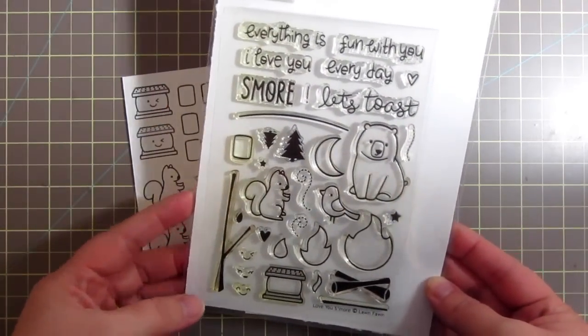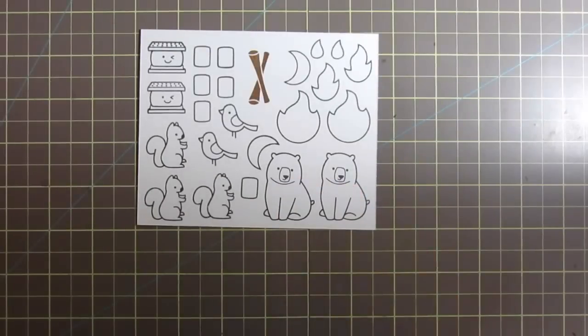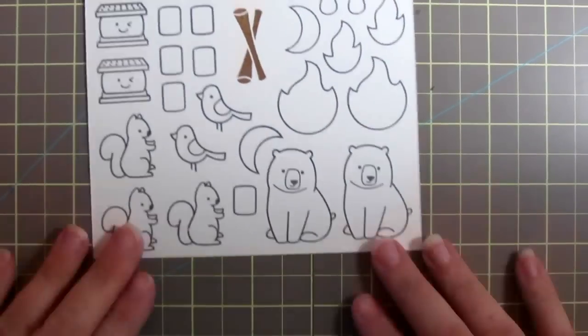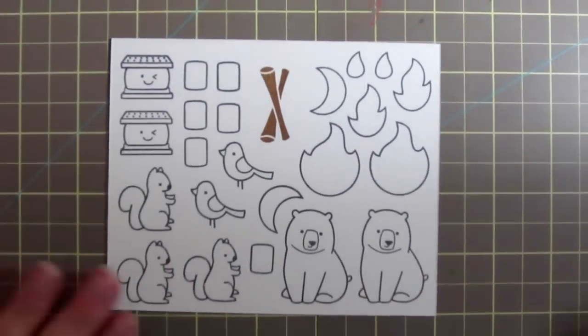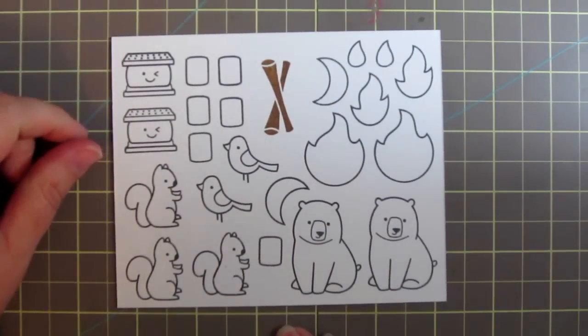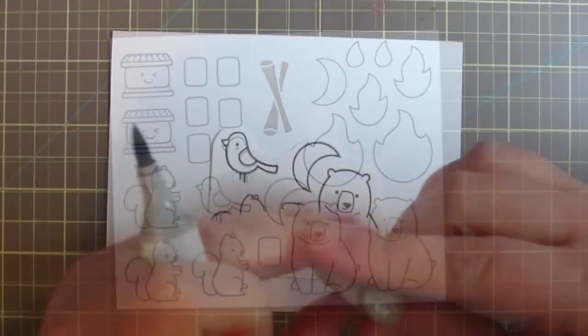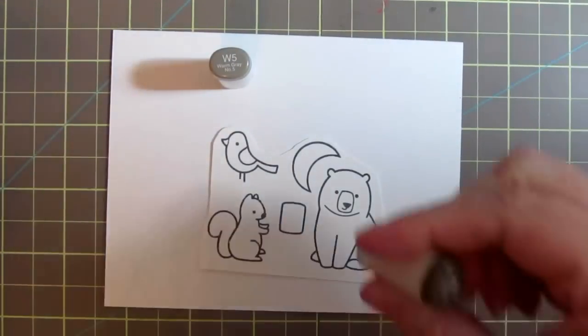Hey everyone, it's Christy. Welcome back to my channel. Today I wanted to make a card using this Lawn Fawn Love You S'more stamp set. As you can see, I've gone ahead and stamped out a whole bunch of images on a sheet, but I'm going to trim out a few that we're going to use on our card today.